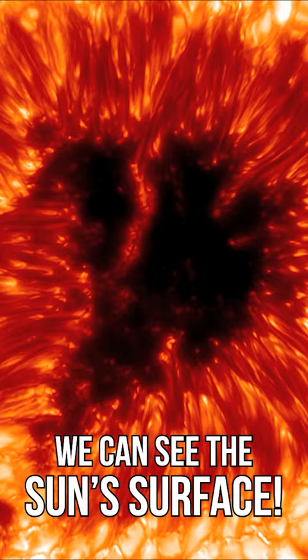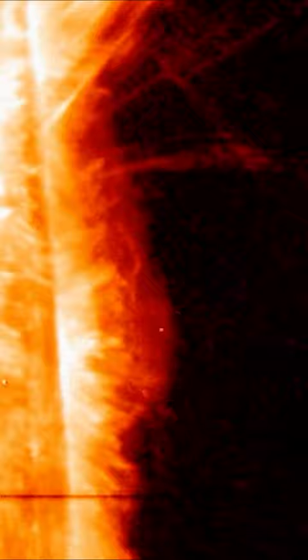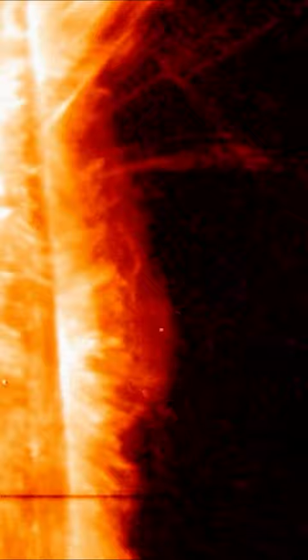The magnetic fields are very active here, often tangling, crossing and reorganising, frequently causing sudden, powerful explosions of energy called solar flares, blasting out into space at extremely high speeds.